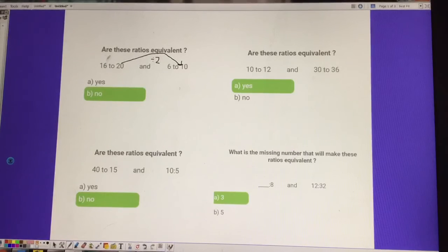But if we split 16 in half, or in other words, if we divide 16 by 2, we get 8, not 6. So, in order for this to be an equivalent ratio to 16 to 20, that 6 would actually have to be an 8. So, these are not equivalent.